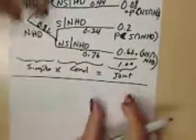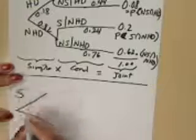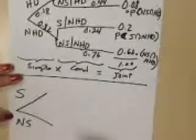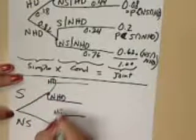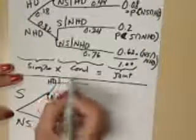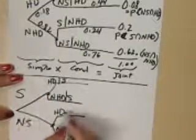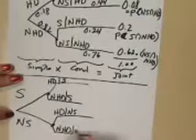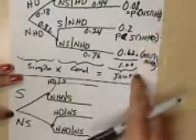Now what we need to do is flip this tree. We started out with health conditions as our first set of branches. Now we need to reverse it and start with smoking and non-smoking as our first set of branches, then expand into our health conditions: heart disease and no heart disease off each smoking branch. These second branches are conditional probabilities — given smoking, and given non-smoking.